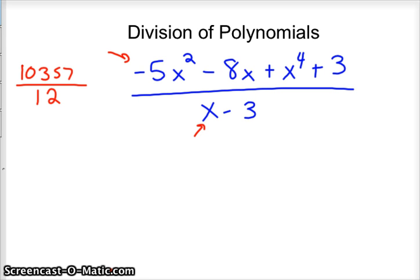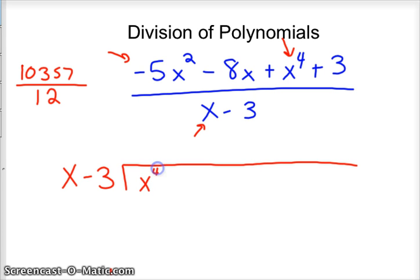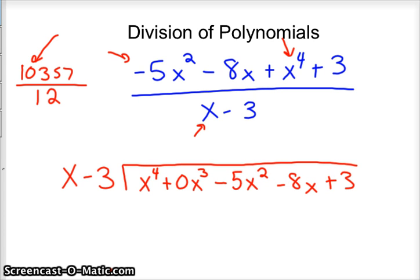Okay, so on the outside you're going to have x minus 3. On the inside, you're going to have, now, this is your largest degree, so it's got to come first. It's like the 10,000ths place in a five-digit number. Then you notice there is no x to the third, but just like we have a zero here with 10,357, we also need that position. So we would just put a zero, a placeholder, to hold that position. So 0x to the third minus 5x squared minus 8x plus 3. And now we're ready to divide.